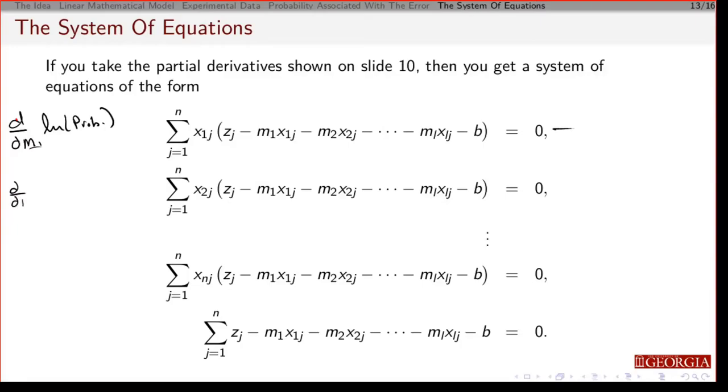I take the derivative with respect to the second slope of the log of the probability. This is the equation I would have gotten for that. And I can do this all the way down and keep going. This is going to be the derivative with respect to the intercept of the log of the probability.